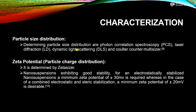The zeta sizer is a very expensive instrument used for the determination of particle charge distribution of nano suspensions. A nano suspension exhibiting good stability — for an electrostatically stabilized nano suspension, a minimum zeta potential of 30 millivolts is required, whereas in the case of combined electrostatic and steric stabilization, a minimum zeta potential of 20 millivolts is desirable.